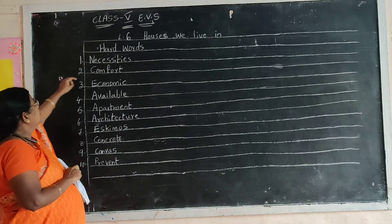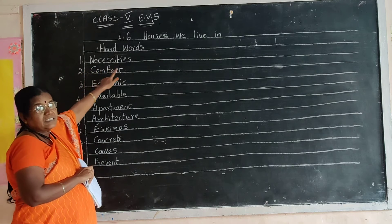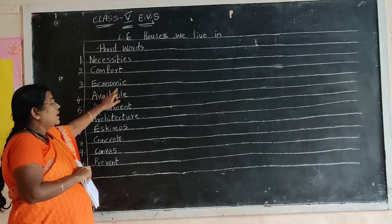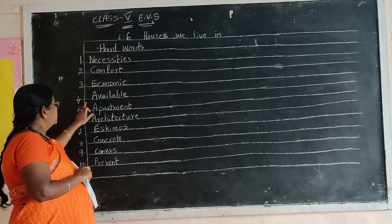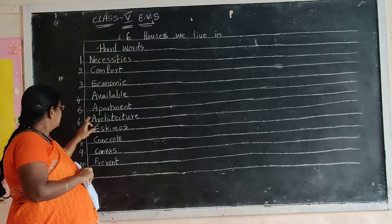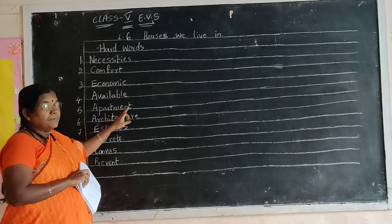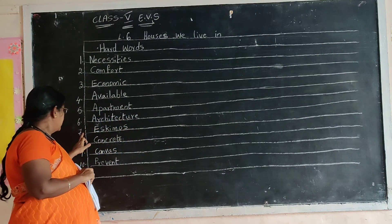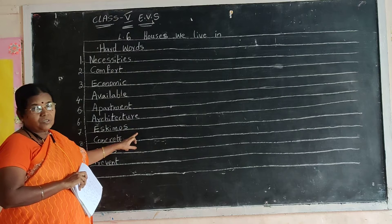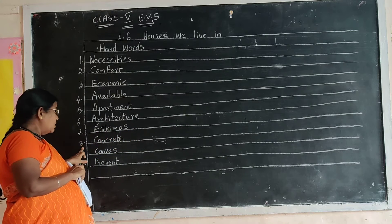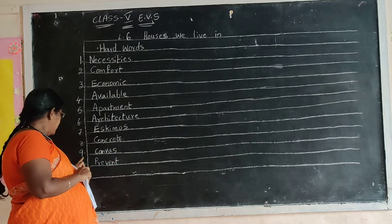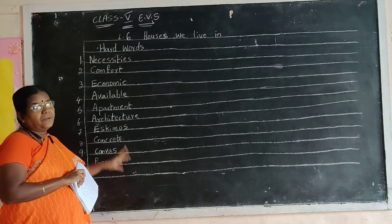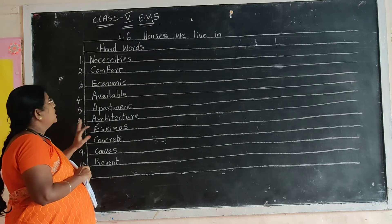I repeat the words again. First one: Necessities. Second one: Comfort. Third one: Economic. Fourth one: Available. Fifth one: Apartment. Sixth one: Architecture. Seventh one: Eskimos. Eighth one: Concrete. Ninth one: Canvas. Tenth one: Prevent. So, these are the hard words.